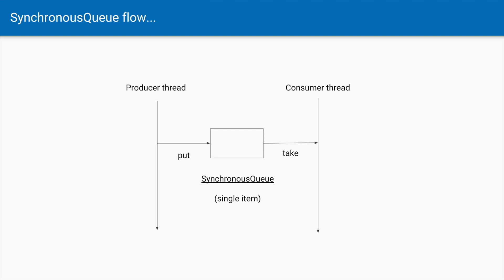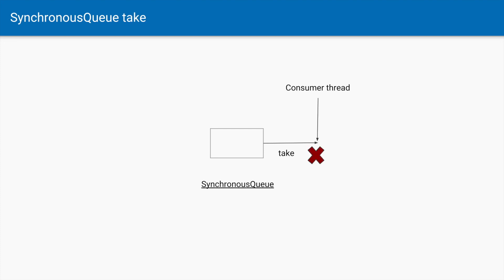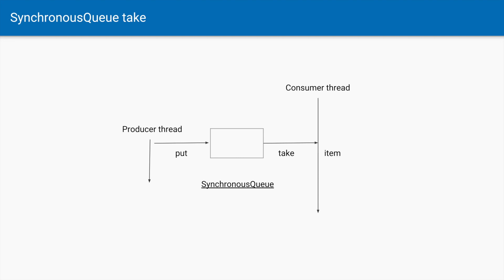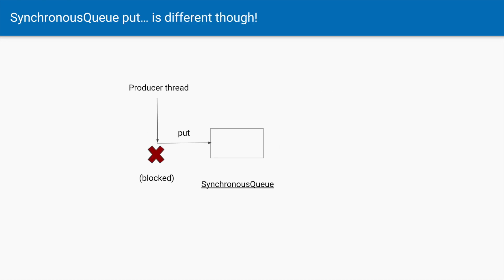We have the same producer thread which can put an item, and a consumer thread which can take the item — same as before. When a consumer thread tries to take an element and there is no element, the consumer thread will get blocked. As soon as a producer thread adds the item, the consumer thread gets the item and proceeds further.